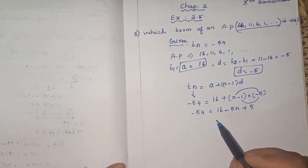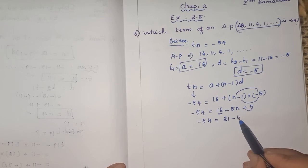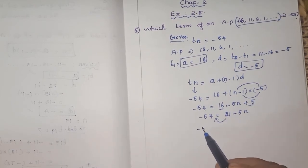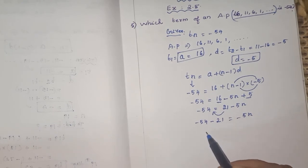What will happen? Minus 54 equals what is 16? Add the numbers: 16 plus 5, 21 minus 5n. Now I am bringing this number here. So minus 54 minus 21. Minus 54 minus 21, both are negative integers. You have to add it and put the common sign. So minus 75 equals minus 5n.